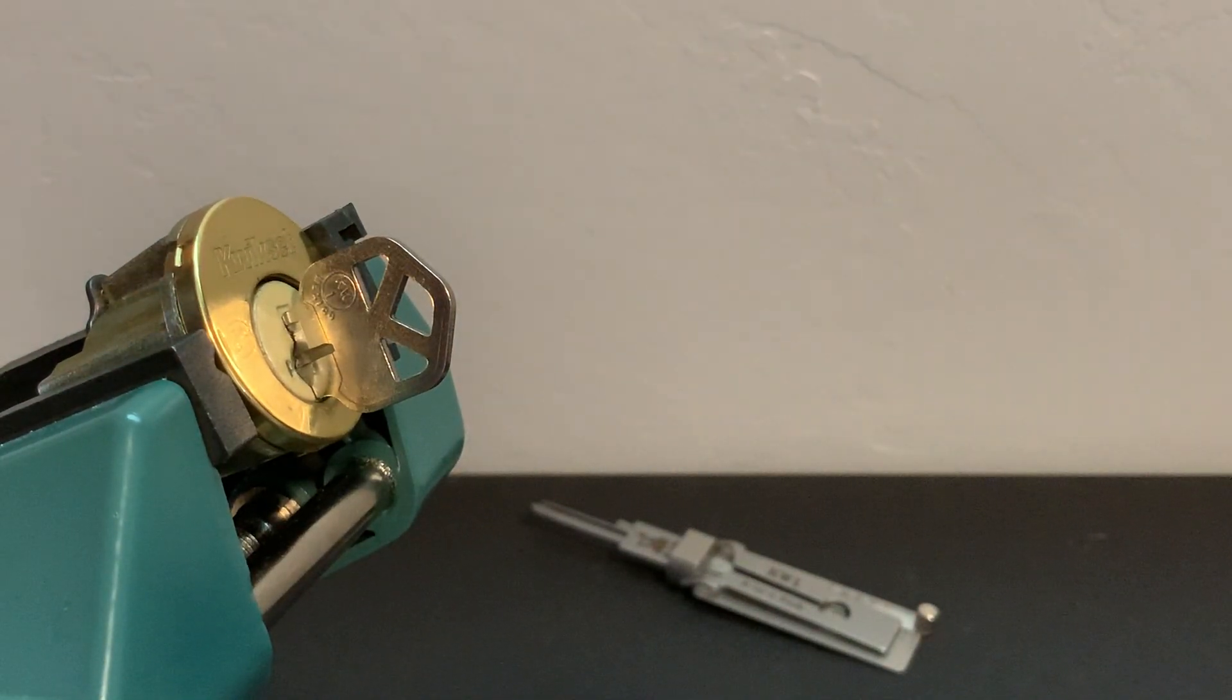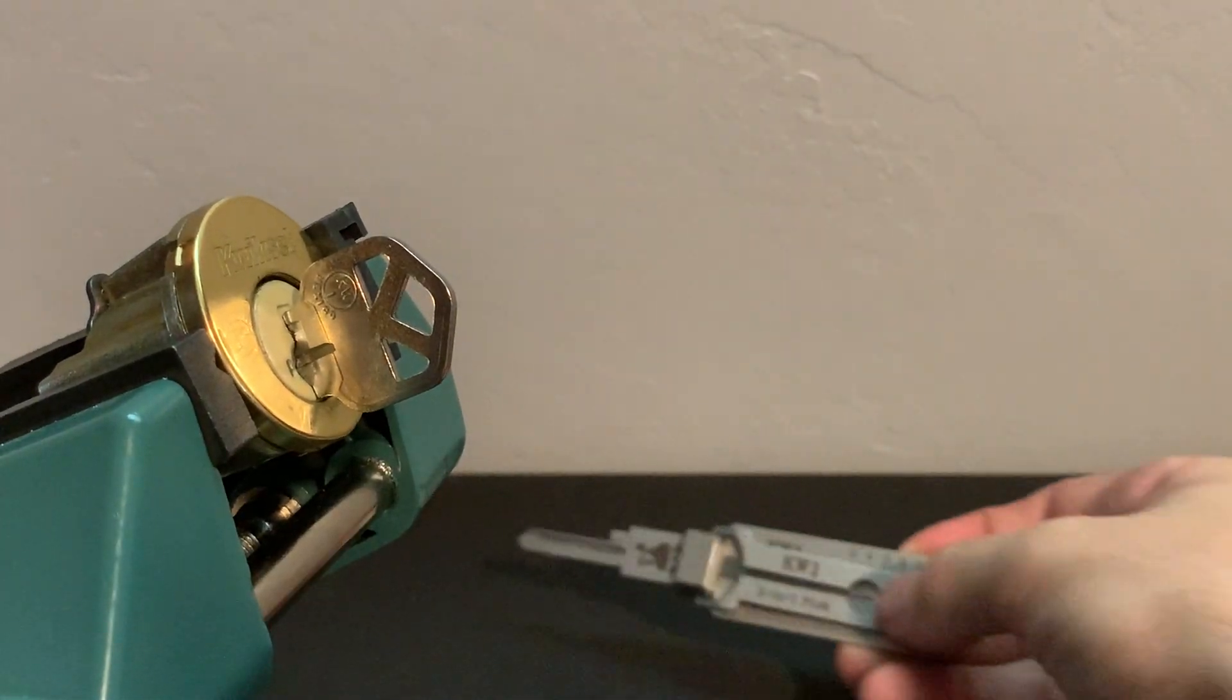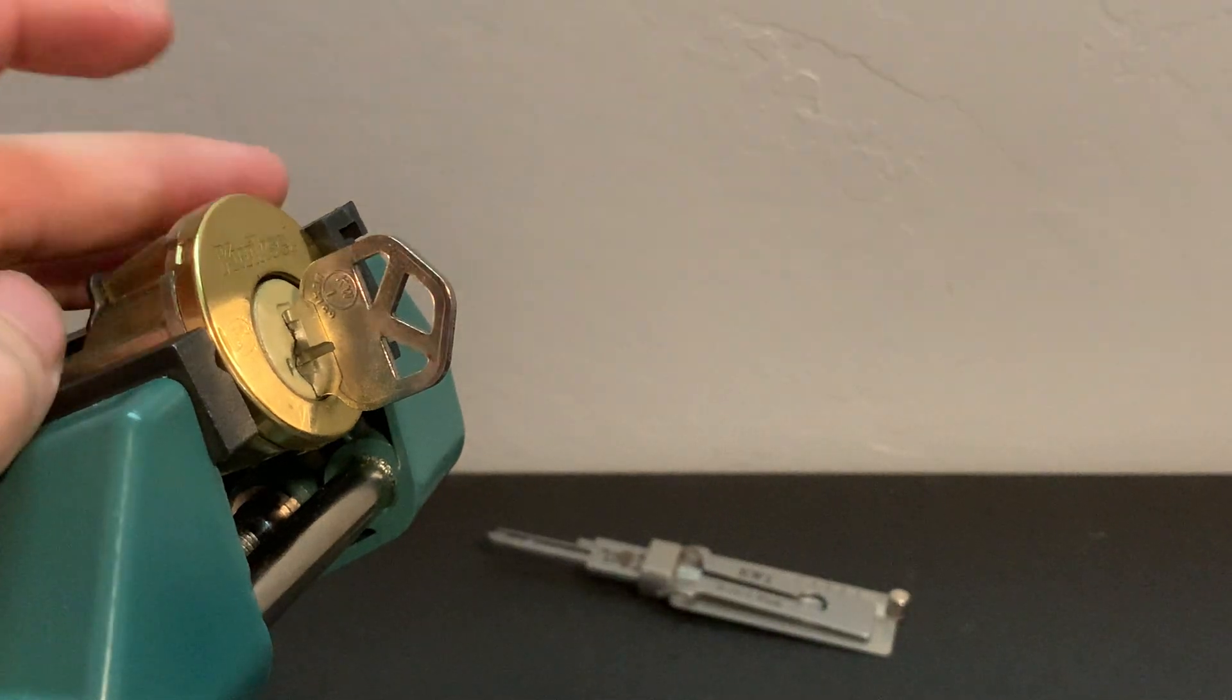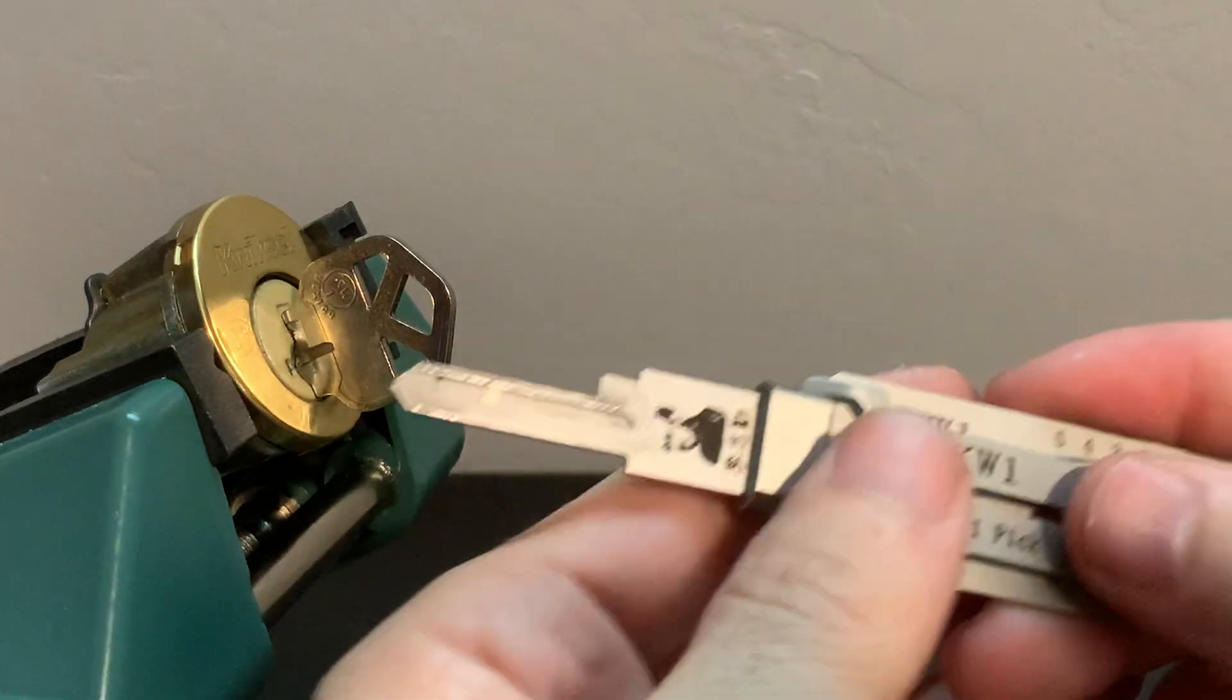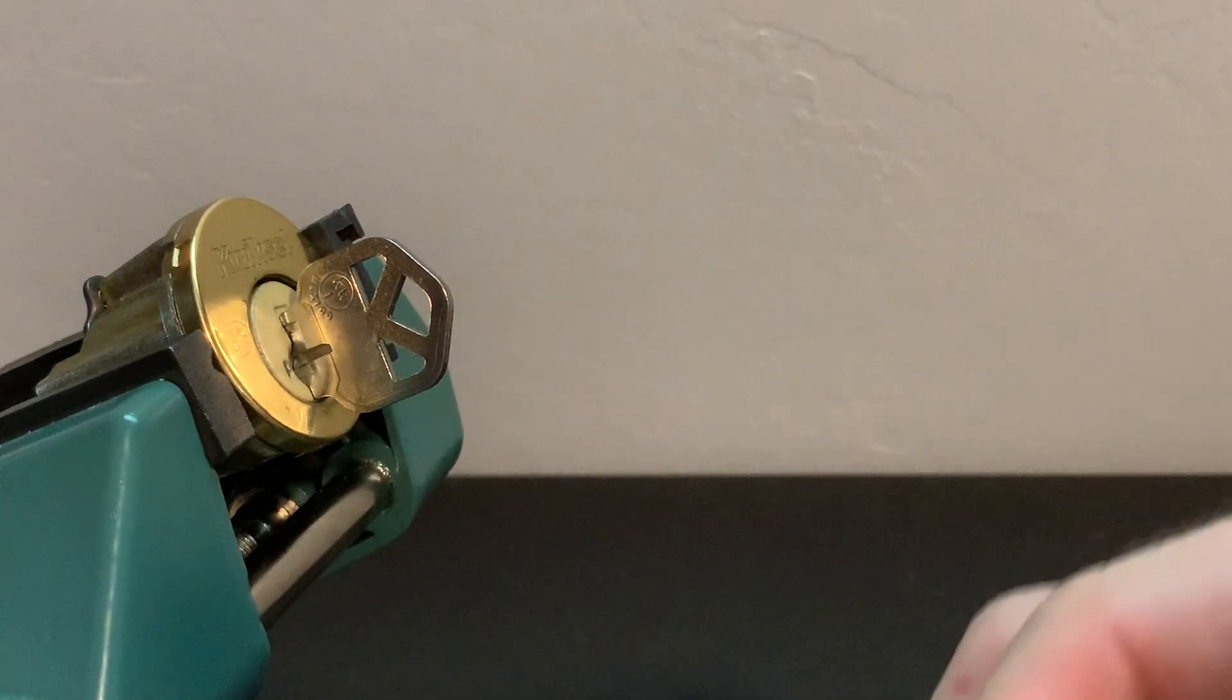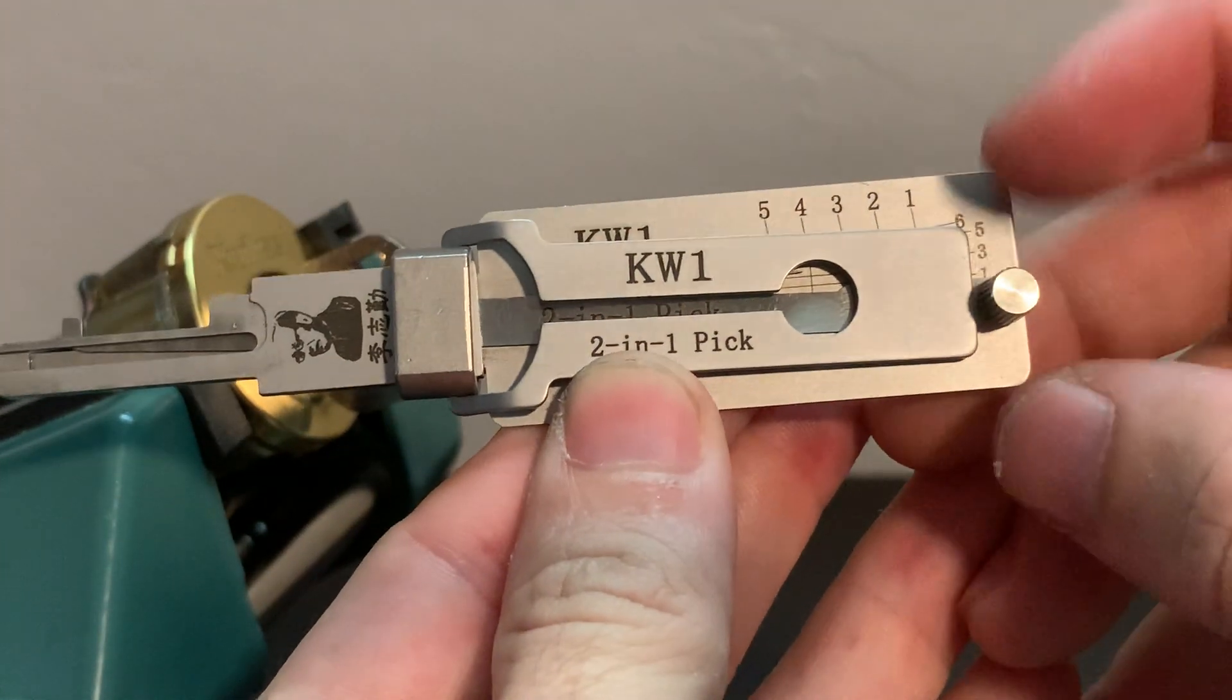So you guys, if you do have a Lishi pick like this one, you no longer have to use force or credit cards on the doorknob versions or worry about drilling these things. If you don't have the Loctec smart lock decoder tool, I do have a video on that. If you'd like to see how that works, you can check out the link right here. But if you don't have that, this is a much cheaper option.